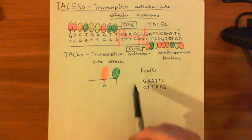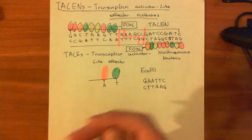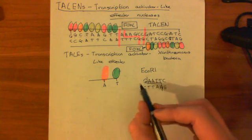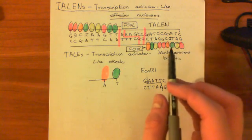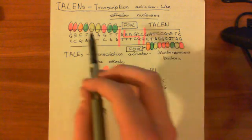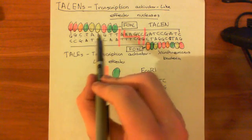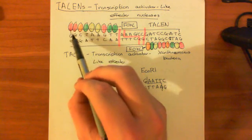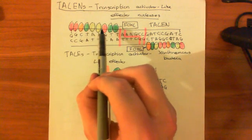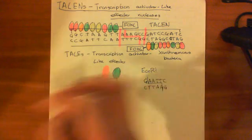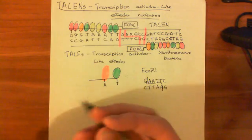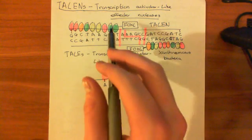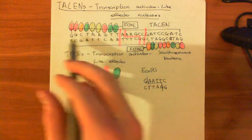The problem with normal restriction endonucleases found in nature, such as EcoRI, is that if you put them into the human genome they will cut all over the place, because their short recognition sequence appears many times. TALENs can be made specific enough to cut at only one point in the entire genome. They are actually preferable to zinc finger nucleases because each TALE recognizes a single nucleotide, giving more flexibility — there are no gaps in coverage, unlike zinc fingers which recognize whole codons and may not cover all 64 codons.